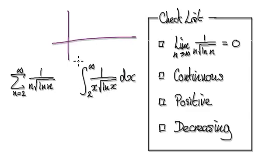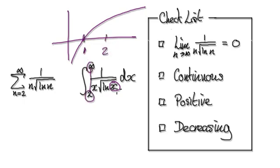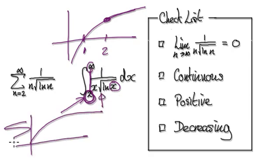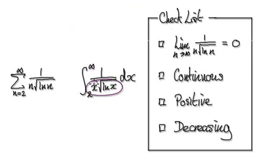Natural log looks like this — natural log breaks down when you put a negative into it. But from 2 to infinity, you're never going to put a negative into it because you start at 2. Square root also breaks down when you put a negative in, but since natural log starting at 2 is always positive, you're never going to put a negative into the square root. And the denominator will never be 0 if you start at 2. So this thing here is continuous.